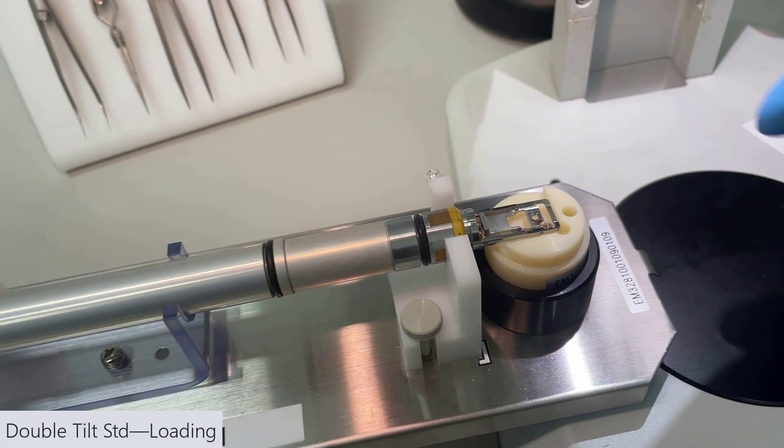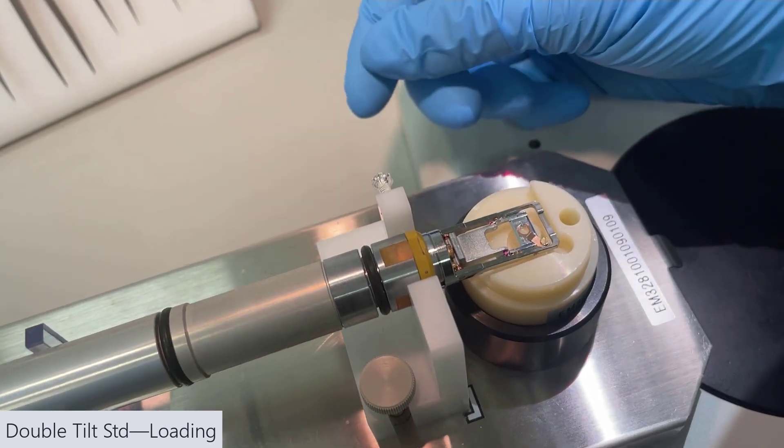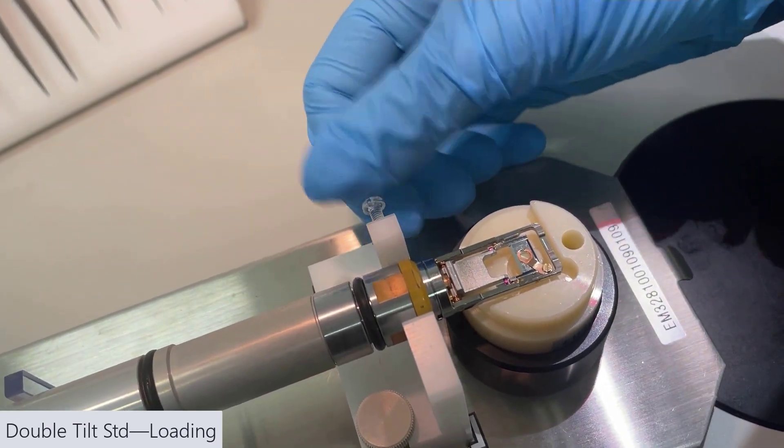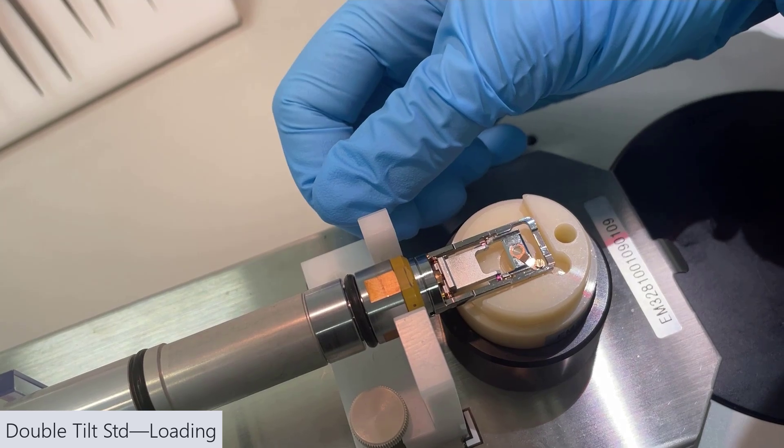Now let's talk about our double tilt standard holder. This is good to use for something like diffraction where you need to tilt in both X and Y. With our double tilt holders, we have the ability to lock the holder with a screw, and if you have that ability, I highly recommend it.